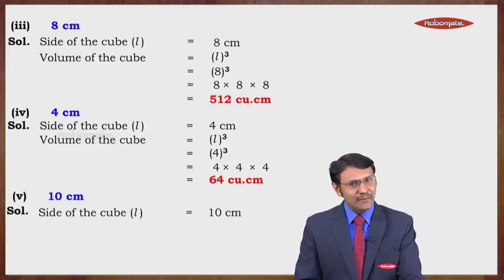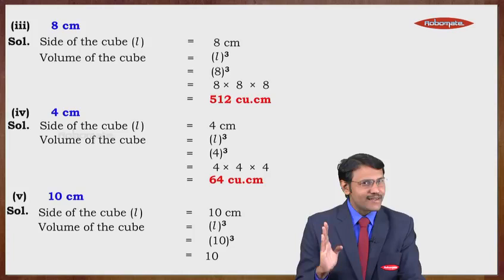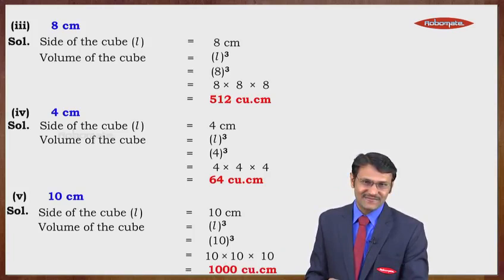If side is 10 centimeters, volume = L³ = 10 × 10 × 10 = 1000 cubic centimeters.